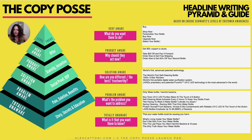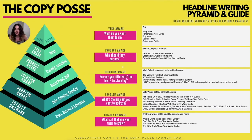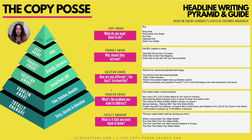I scrolled through Lark's ad library and pulled out all of the great hooks and headlines, from the ad captions or from headlines written right on the images. I also went over to Lark's website and pulled out some really great headlines and hooks. Here's what my headline pyramid and guide looks like: you can see the pyramid based on the levels of awareness on one side, and on the other side the focus of your copy or headlines. There are five leading questions that'll really help you identify what level your headline is at. Very aware: 'What do you want them to do?' — the next steps. Product aware: 'Why should they act now?' — includes scarcity and incentive. Solution aware: 'How are you different, the best, trustworthy?' — use social proof and USP. Problem aware: 'What's the problem you want to address?' — use pain, solution, and benefits. And totally unaware: 'What is it that you want them to know?' As you get to the base of your pyramid, your copy is going to be more and more indirect, while the top of the pyramid is where you get very specific, going straight for the offer.